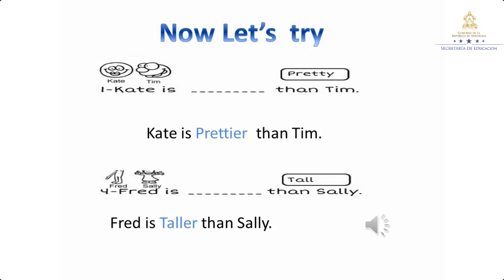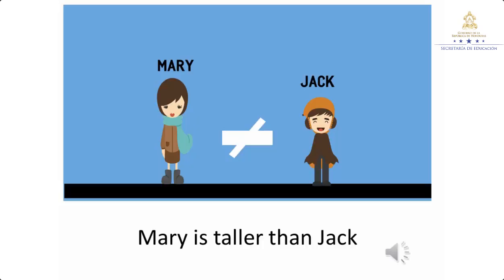Miren nuestra segunda oración: Fred and Sally, y nos dan la palabra 'tall'. Es una sola sílaba, entonces aplicamos la primera regla y simplemente agregamos 'er' al final. Fred is taller than Sally. Fred es más alto que Sally. Tenemos otro ejemplo: Mary is taller than Jack. Mary es más alta que Jack.